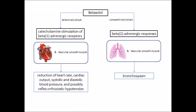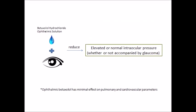Now we're going to talk about the chemical reactions of Betaxolol. Betaxolol selectively blocks catecholamine stimulation of beta-1 adrenergic receptors in the heart and vascular smooth muscle. This results in a reduction of heart rate, cardiac output, systolic and diastolic blood pressure, and possibly reflex orthostatic hypotension. Betaxolol can also competitively block beta-2 adrenergic responses in bronchial and vascular smooth muscle, causing bronchospasm. For Betaxolol hydrochloride ophthalmic solution, when instilled in the eyes, it reduces elevated as well as normal intraocular pressure whether or not accompanied by glaucoma. Betaxolol has minimal effect on pulmonary and cardiovascular parameters.